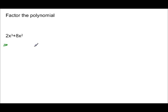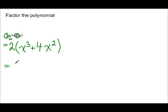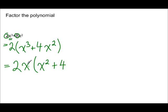Now let's try one without tiles: 2x cubed plus 8x squared. First, is there something common? Yes — there's a factor of 2 in both terms, since 8 is 2 times 4. Taking out 2 leaves x cubed plus 4x squared. Now ask: is there something else to factor? Yes — x cubed has x squared as a factor, and so does 4x squared, so we can take out x squared.